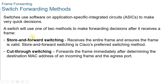For store-and-forward switching, this method makes a forwarding decision on a frame after it has received the entire frame and checked it for errors using a mathematical error-checking mechanism known as the CRC or cyclic redundancy check. Cut-through switching begins the forwarding process after the destination MAC address of an incoming frame and the egress port has been determined.